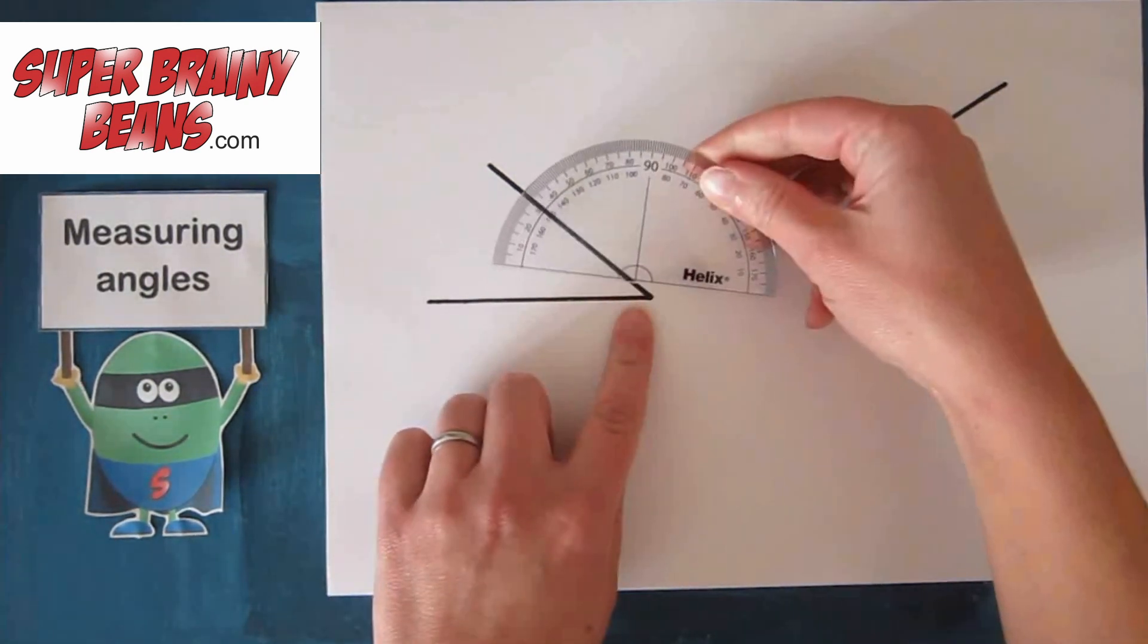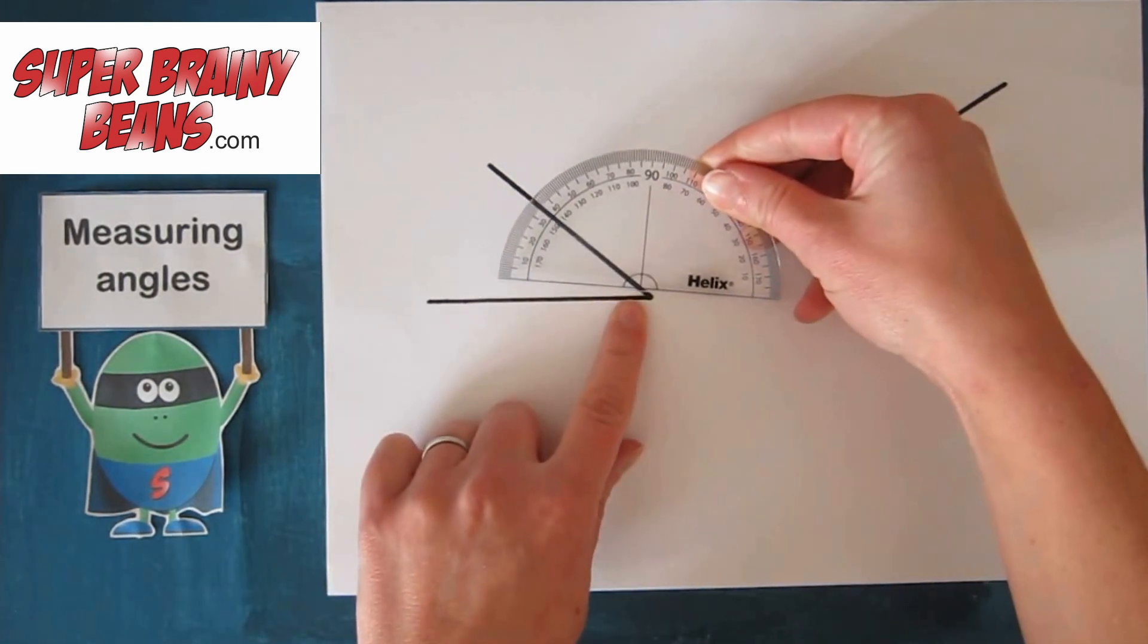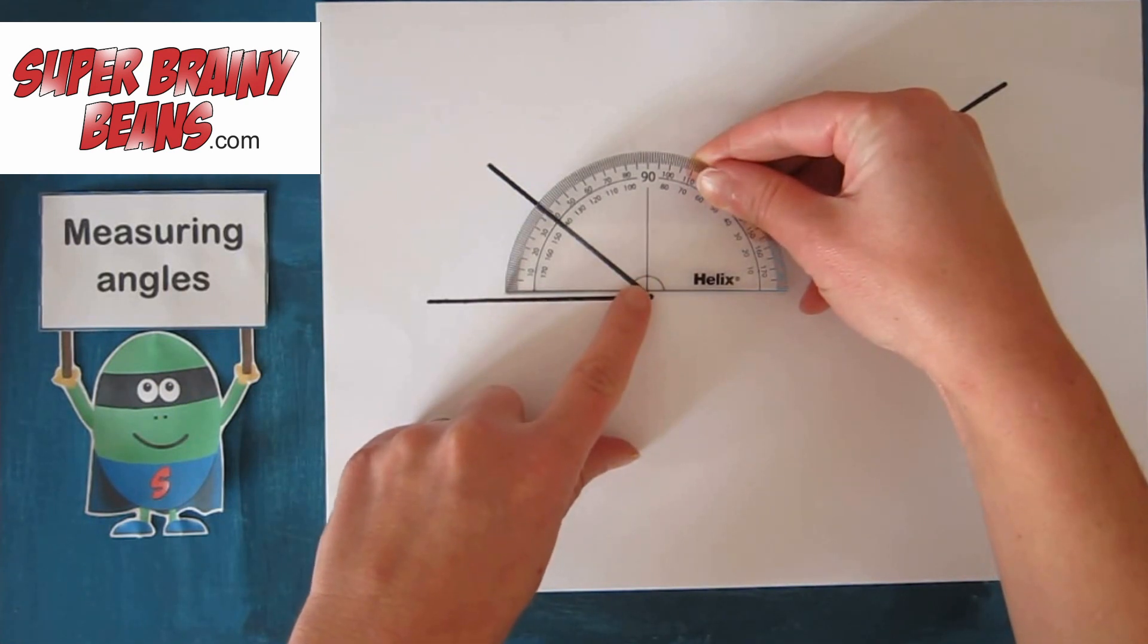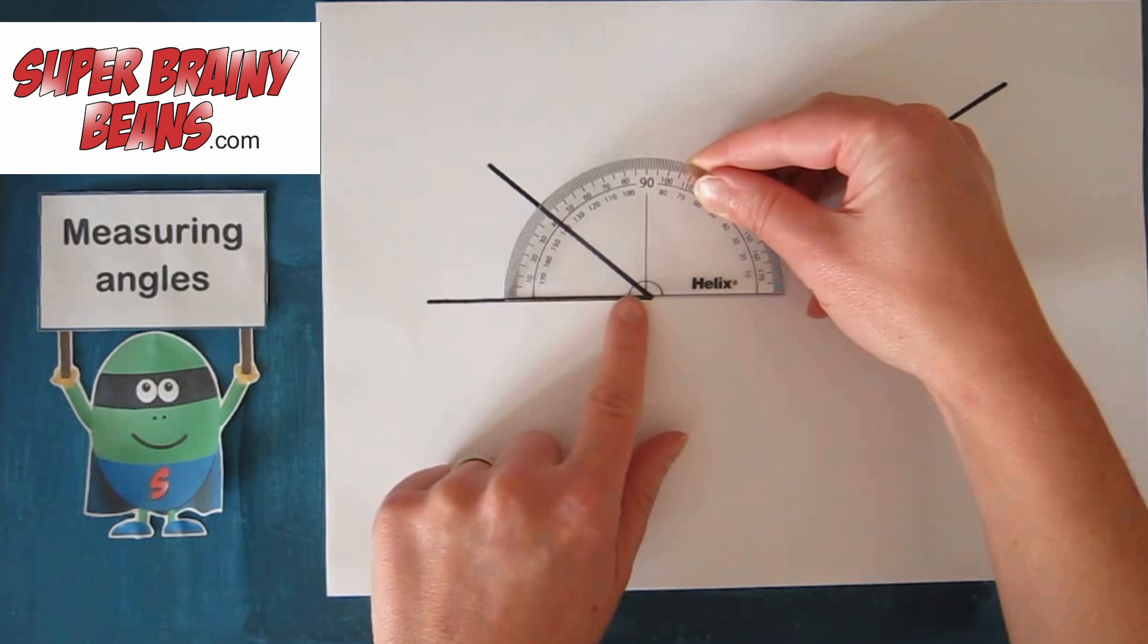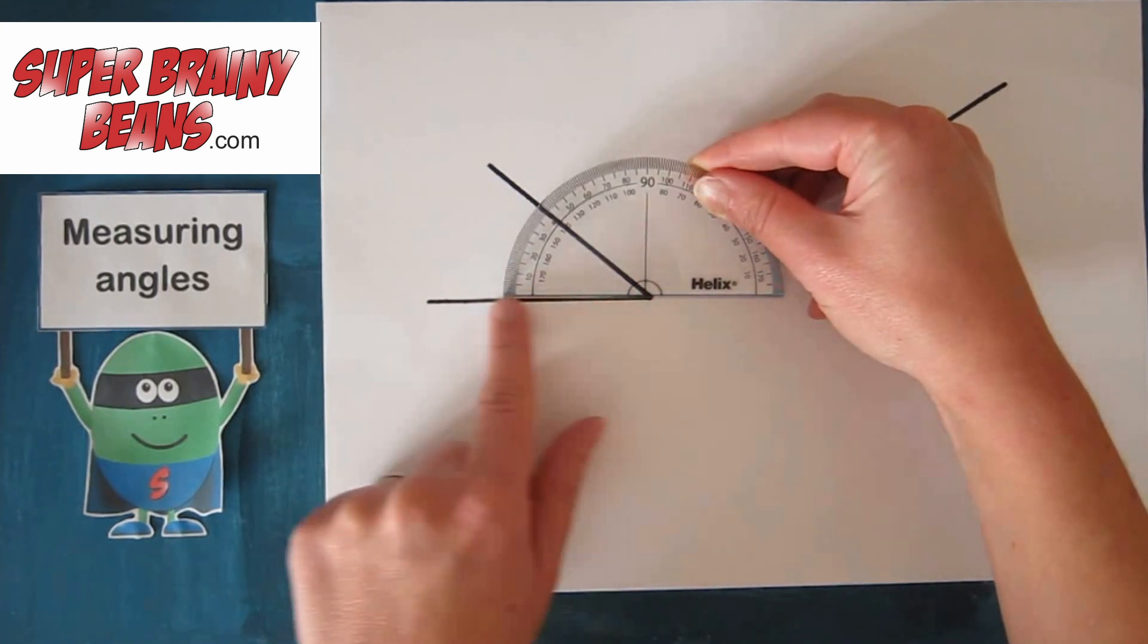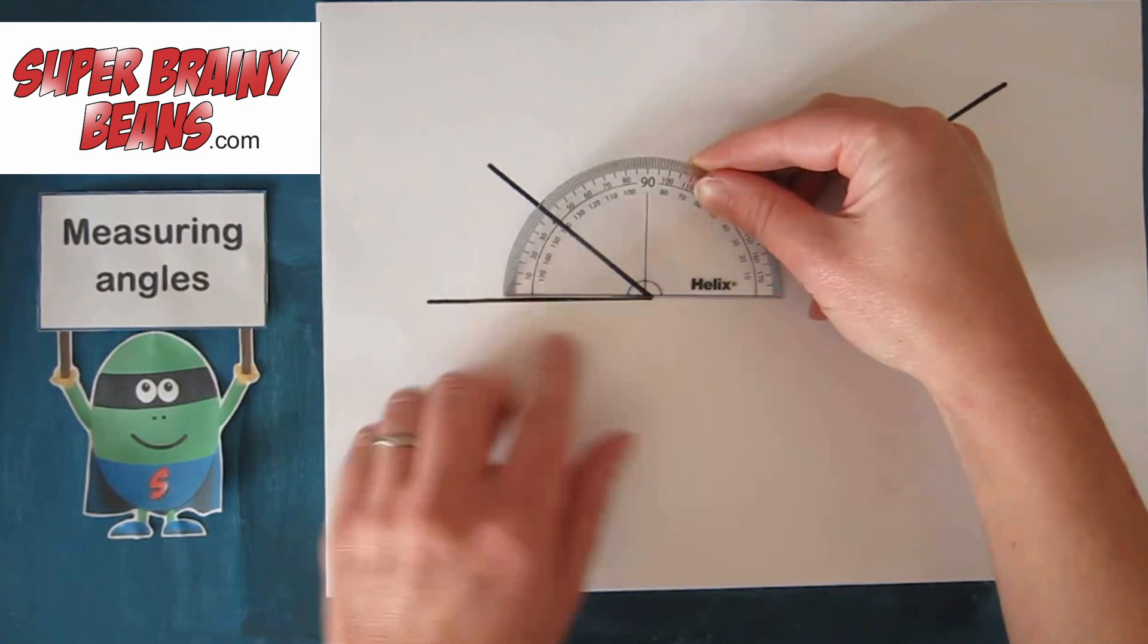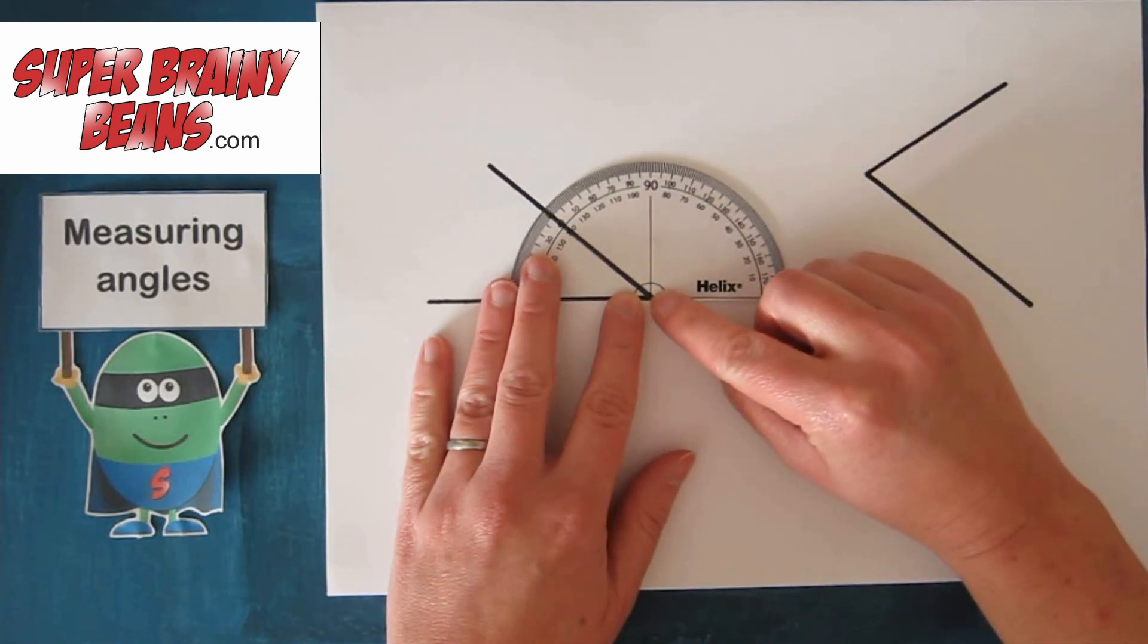So we line up the protractor on this line here, use the middle of the protractor where the lines join and line it straight up where the zero is with this line and make sure this is in the corner.